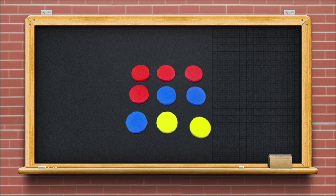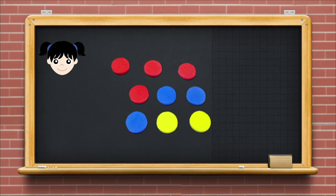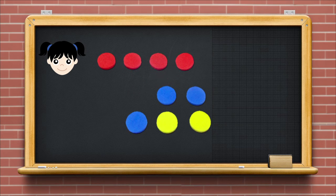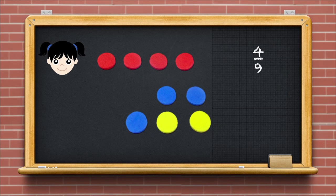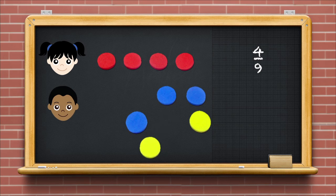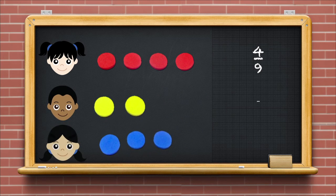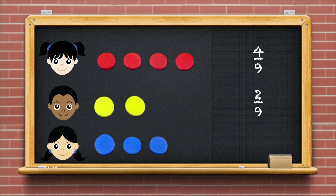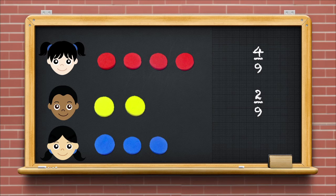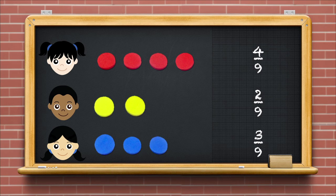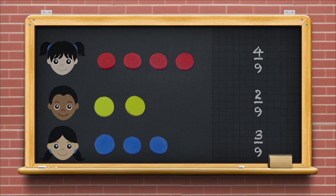This collection or group consists of 9 counters. Let us give 4 counters to Gita. Gita now has 4 out of 9 counters. Now, give 2 counters to John. John has 2 out of 9 counters. How many counters from the collection are left for Amina? We write the fraction as 3 upon 9.